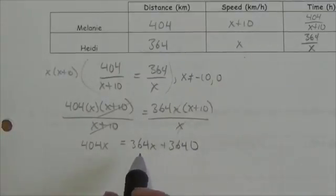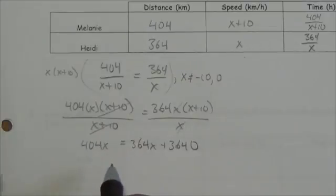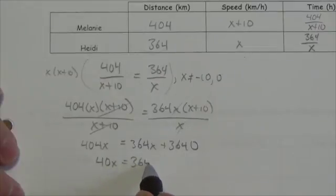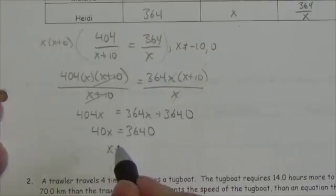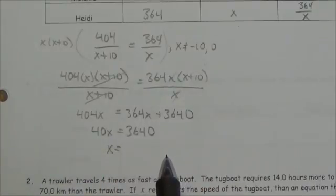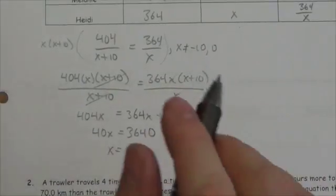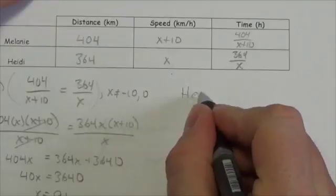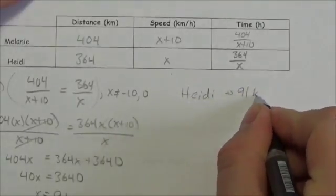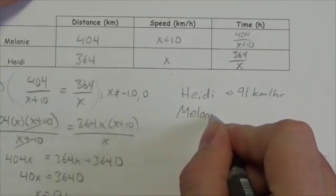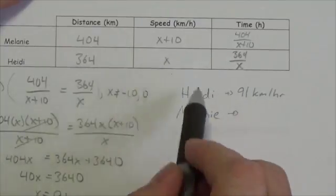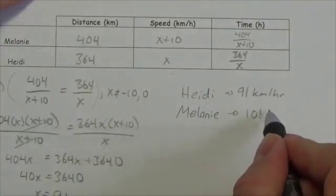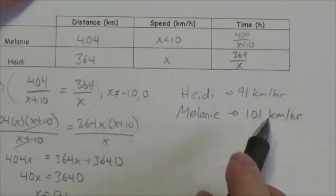Move 364x to the other side by subtracting from both sides: 40x equals 3640. Dividing gives x = 91. Since x was Heidi's speed, Heidi is going 91 kilometers per hour. Melanie was going 10 more than that, so Melanie is going 101 kilometers per hour.